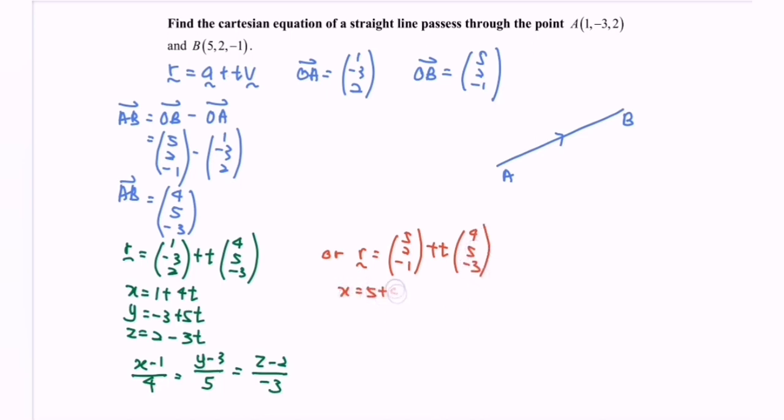So X equals 5 plus 4T. Y equals 2 plus 5T. Z equals negative 1, negative 3T. That is a second situation.